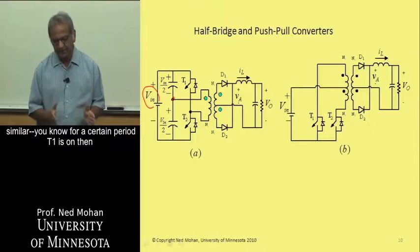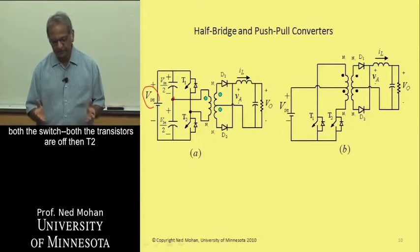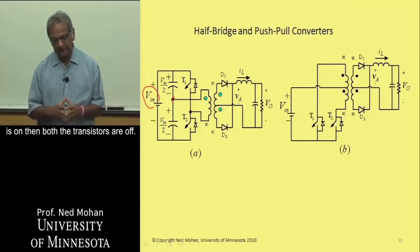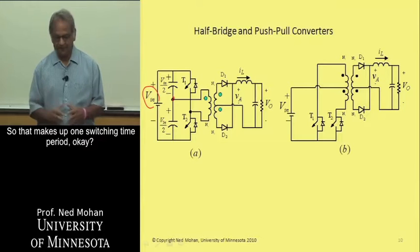So the operation here is very similar. For a certain period, T1 is on, then both the transistors are off, then T2 is on, then both the transistors are off. So that makes up one switching time period.